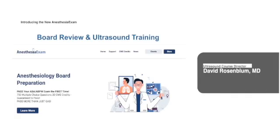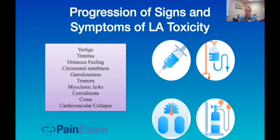The first symptom a patient with a local anesthetic toxic reaction may complain of is being disinhibited or a little obtunded. They may complain of an ominous feeling, vertigo, tinnitus, circumoral numbness, metallic taste in the mouth, breathlessness, or garrulousness. This can progress to tremors, myoclonic jerks, convulsions, coma, and cardiovascular collapse.